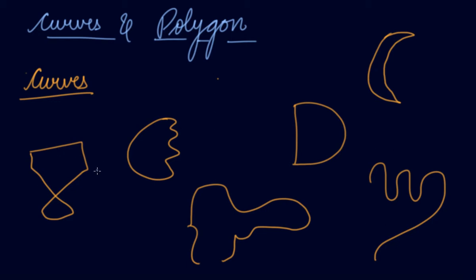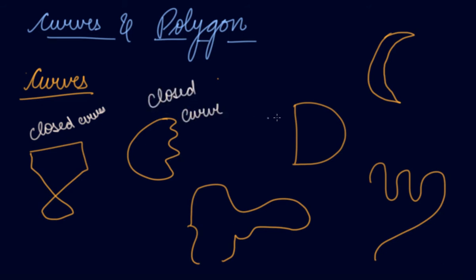Now, the curves which are closed — like this figure is closed — are known as closed curves. This figure is again closed, so it is again a closed curve. This is also closed, again a closed curve. This figure is again a closed curve.